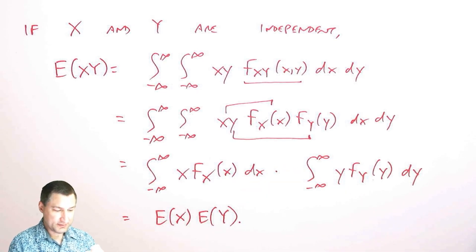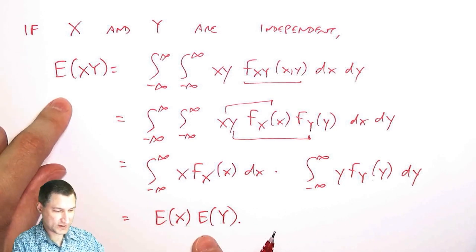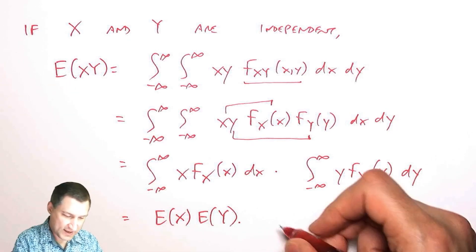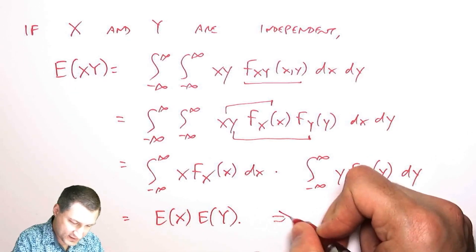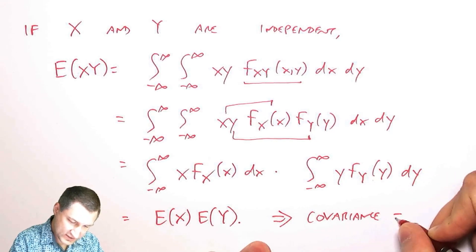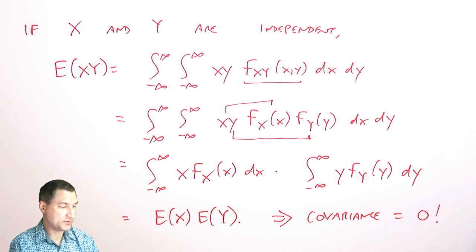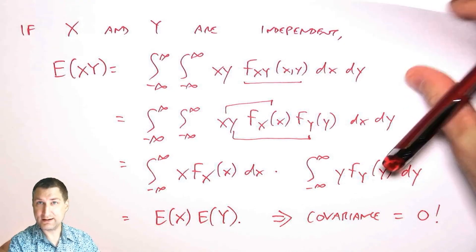So that would mean that the correlation between X and Y in this case would just be the product of the means. And that would mean that the covariance is equal to zero. And we give that a special name called uncorrelated.